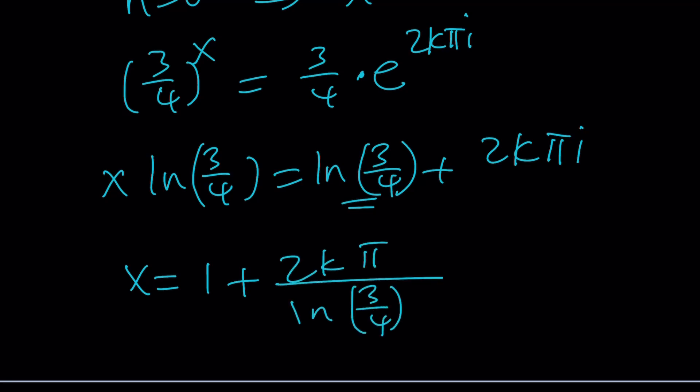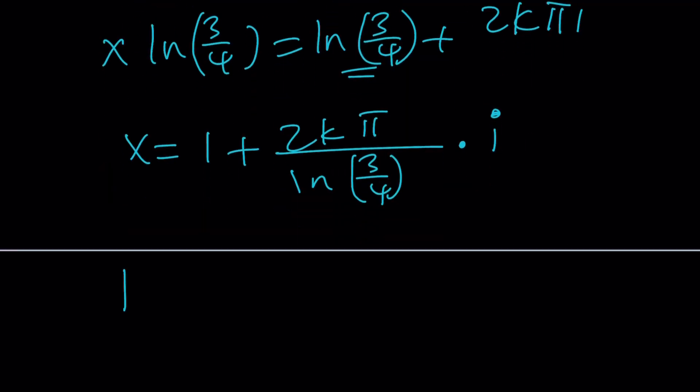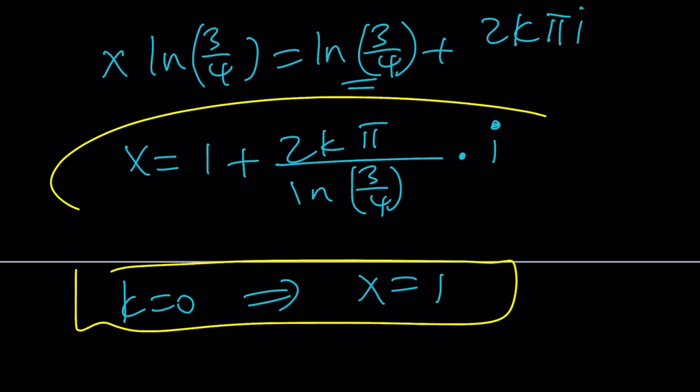I just wanted to emphasize the fact that this can be written as a complex number in standard form. And again, if k is equal to 0 from here, x is going to be 1, which is going to give us the real solution that we got before. Therefore, these are going to be the complex solutions.